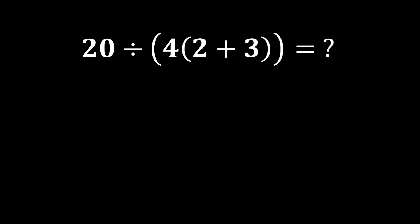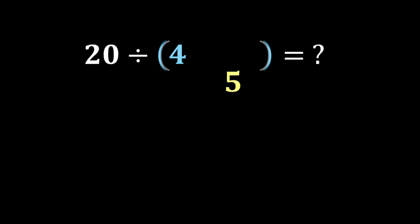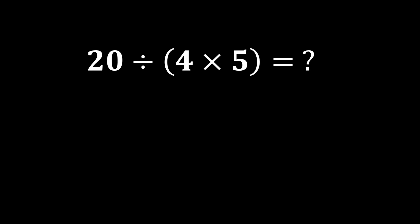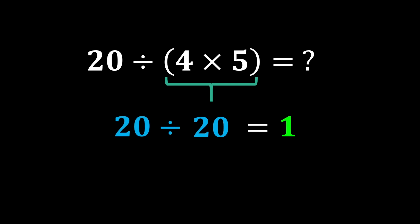Next example: 20 divided by the product of 4 and (2 plus 3). This expression has two parentheses nested inside each other. In such cases, start solving from the innermost parentheses and move outward. So 2 plus 3 becomes 5, and the expression becomes 20 divided by (4 times 5). According to PEMDAS, we solve the parentheses first: 4 times 5 becomes 20. And in the end, 20 divided by 20 becomes 1.